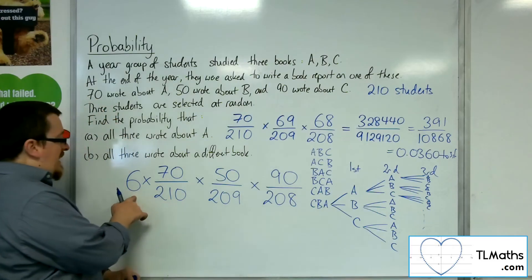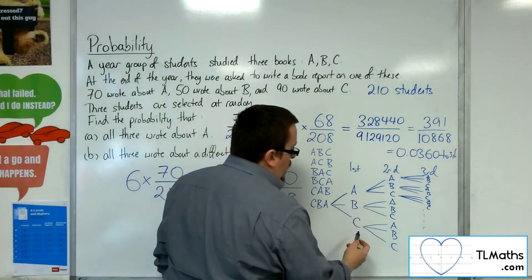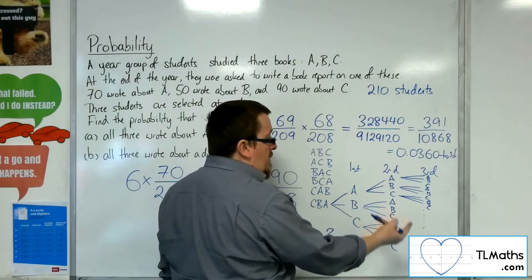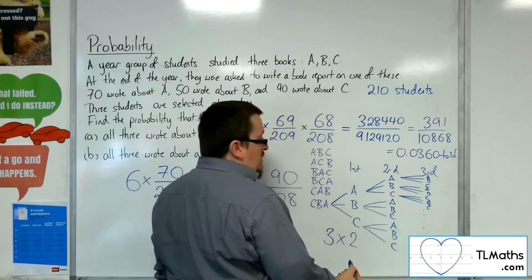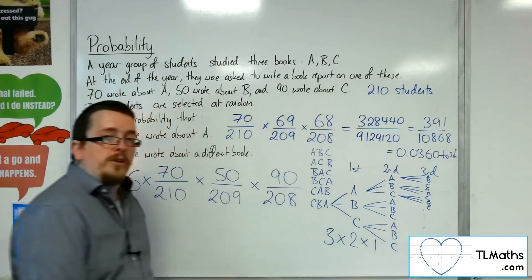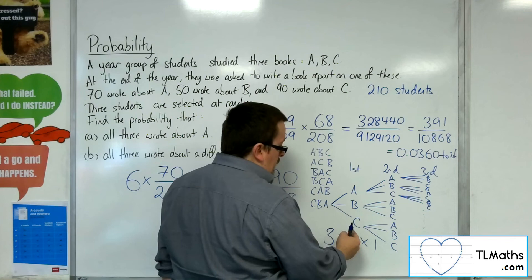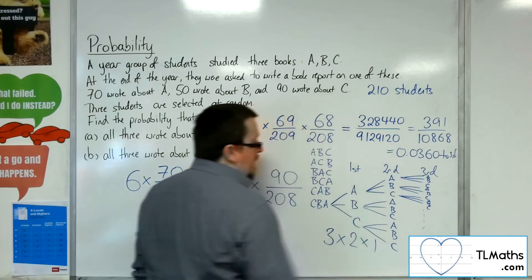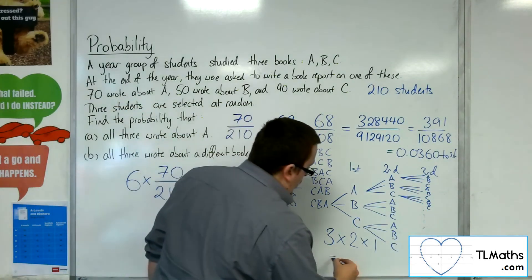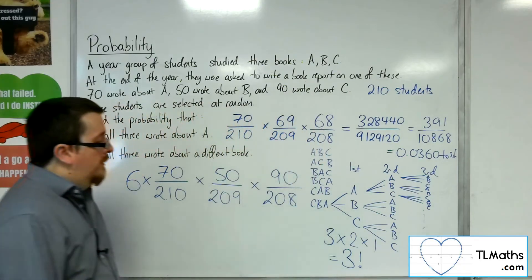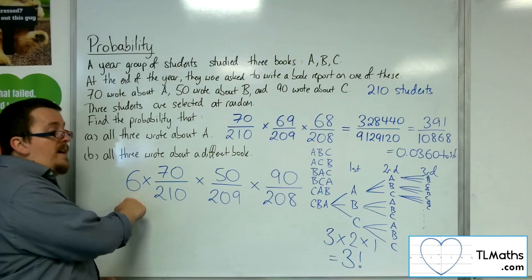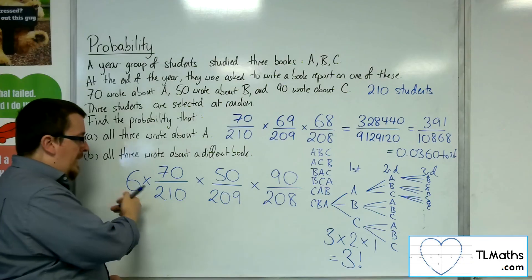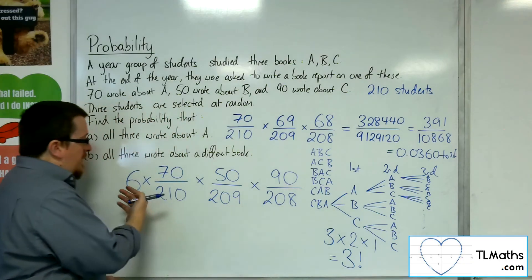How to get to that six quickly? We had three choices to make initially, then you had two choices left because you'd already picked one of them. And once you'd picked two, there was only one choice left. You had three choices A, B, C. Once you picked A, it could either be B or C. Once you'd picked B, you've only got C left. So three times two times one, which is three factorial. If there had been four students selected at random, then there would have been four factorial here. I would have had four probabilities times by four factorial.